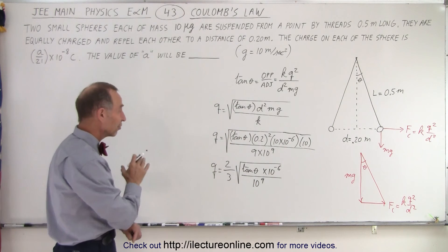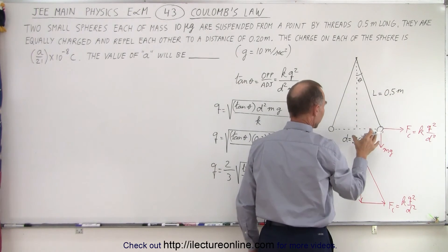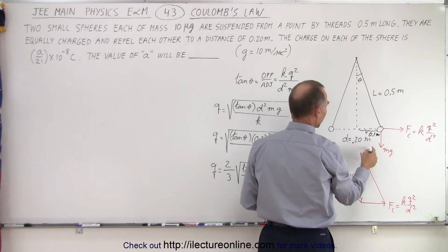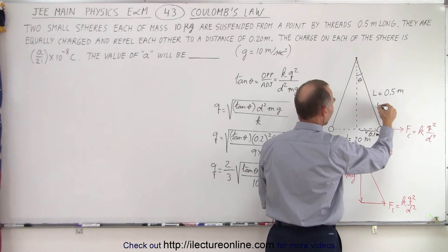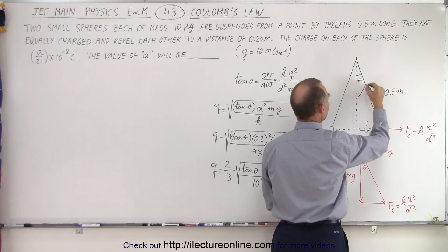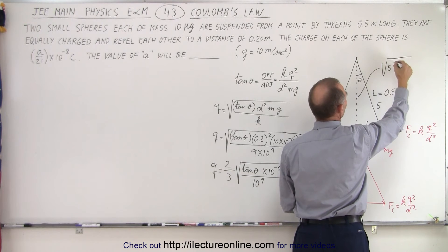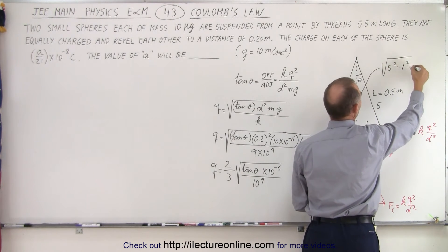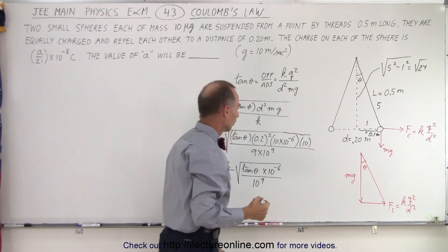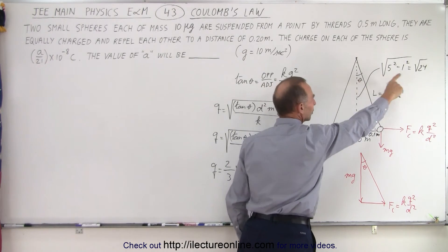Okay, now we need to figure out what the tangent of theta is. So for that, we go back to this triangle. We have 0.5 meters here. This here would be 0.1 meter, because it's half the total distance. And so that's a ratio of 5 to 1. If this is 5 and this is 1, then this side right here can be taken to be the square root of the hypotenuse squared, which is 5 squared minus the opposite side squared, 1 squared, which is 25 minus 1, or the square root of 24.